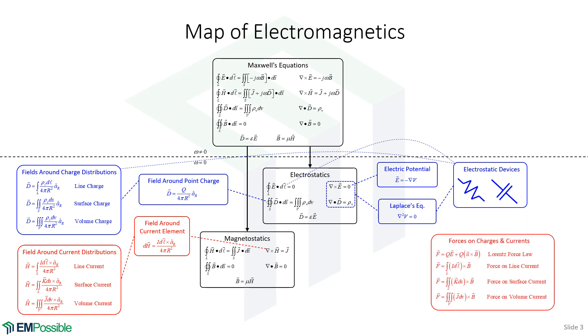Then the Lorentz force law pops in, from which we can calculate the forces on line currents, surface currents, and volume currents. This leads into electric motors and those types of things. We won't cover those applications in this course, but we have to understand the forces on charges and currents. Then, given the fields around the different current distributions, we can analyze magnetostatic devices, such as inductors.